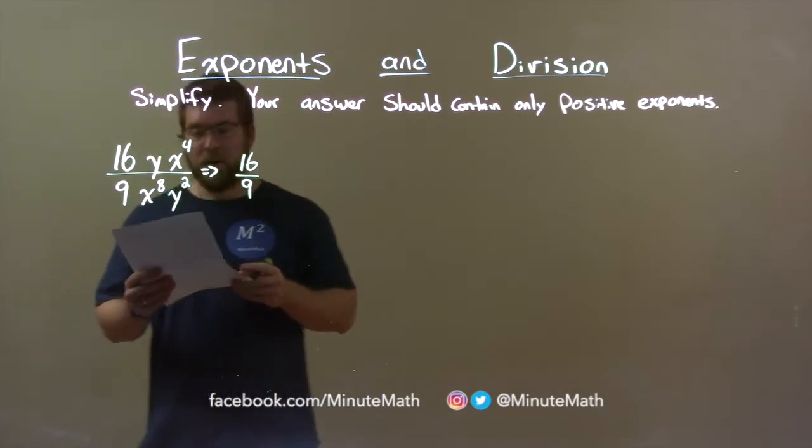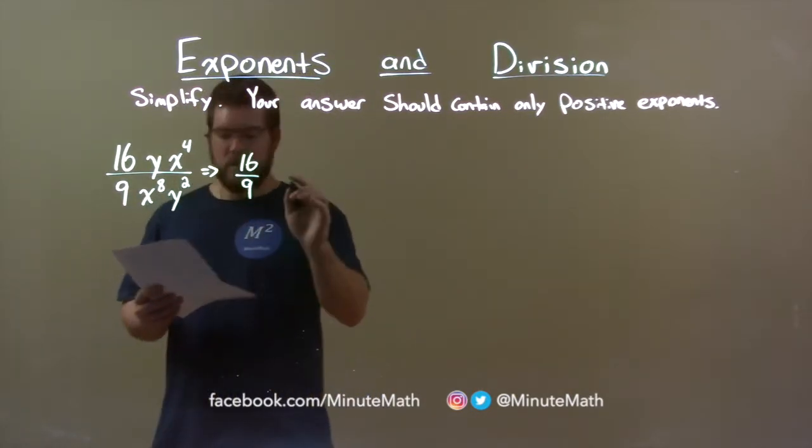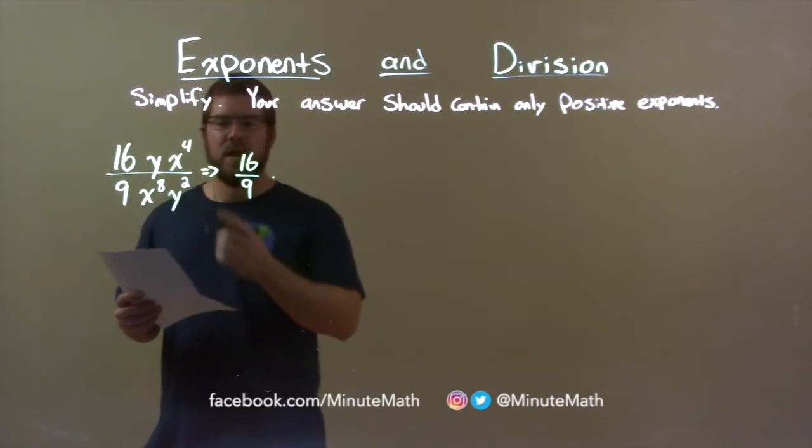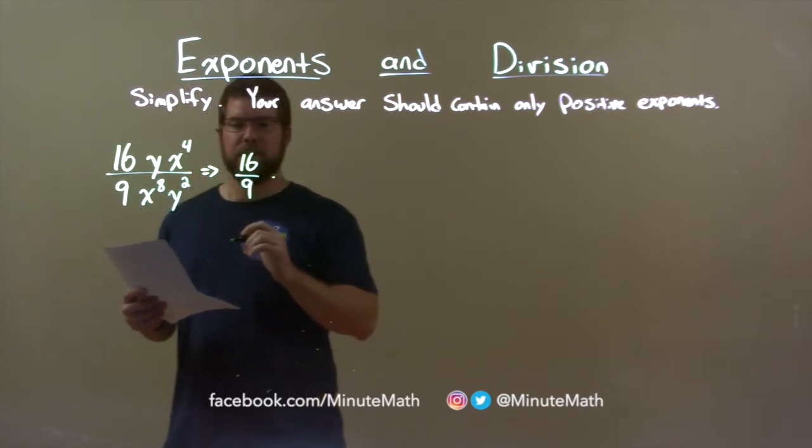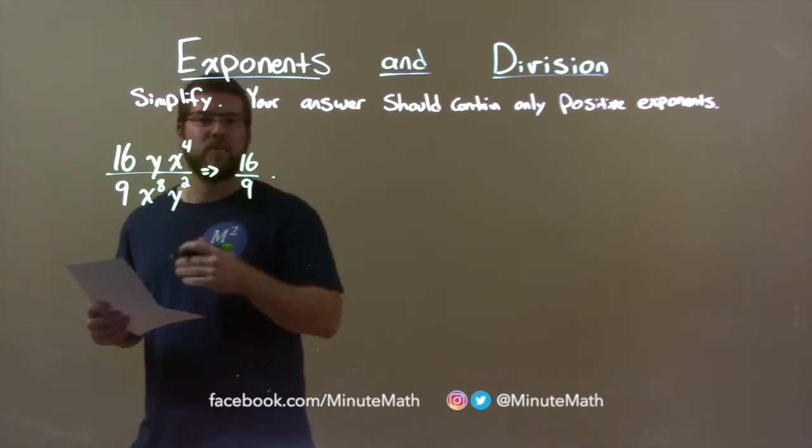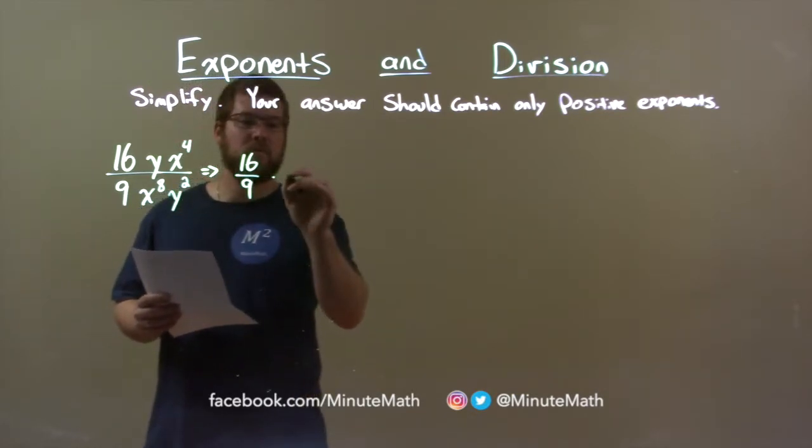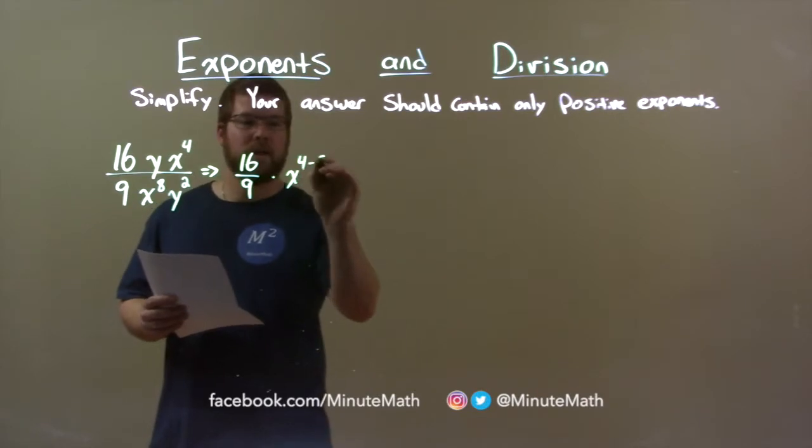Now let's look at our variables. We can only divide our like variables. We have x to the 4th here divided by x to the 8. Be careful, that kind of crisscrossed there. When we have the same base, we subtract the exponents. So we have x to the 4 minus 8 power.